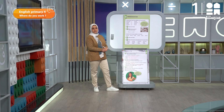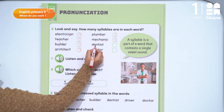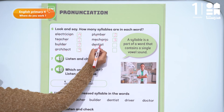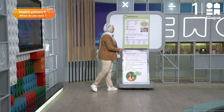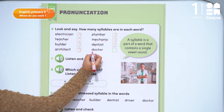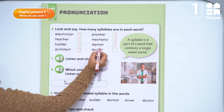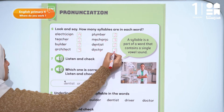Dentist — I have vowel E and vowel I, so two syllables. Doctor — I have vowel O and another vowel O, so two syllables.